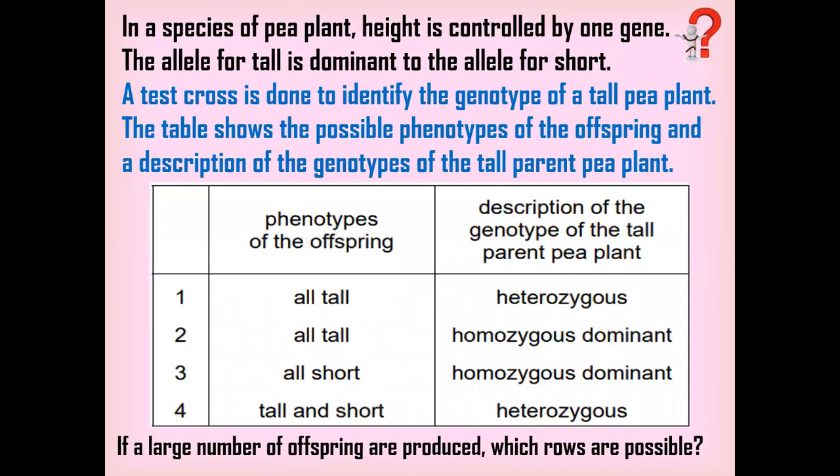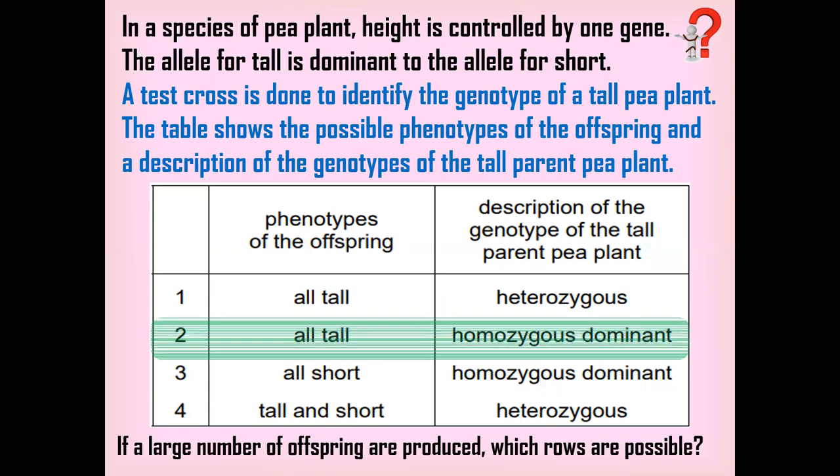Now let's look at a practice question. A test cross is done to identify the genotype of a tall pea plant. A table shows the possible phenotypes of the offspring and the corresponding description of the genotype of the tall parent pea plant. In one column, the phenotype of offspring is given, and in another column, the description of the genotype of the tall parent pea plant is given. If all offspring are tall, the genotype of the parent is homozygous dominant. If 50% are tall and 50% are short, the genotype of the parent plant is heterozygous.